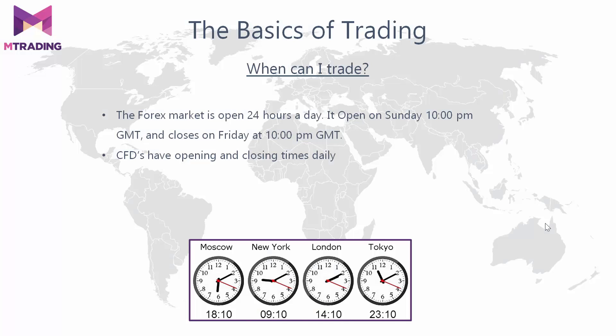You are probably wondering when and how you can trade. The forex market is open pretty much 24 hours a day — it opens on Sunday at 10pm GMT and closes on Friday at 10pm GMT. CFD trading is slightly different; they have both opening and closing times on a daily basis. All trading times can be found on the contract specifics page.